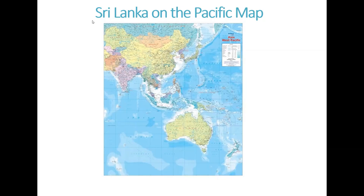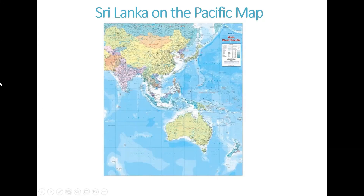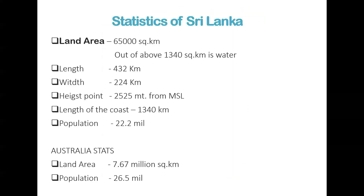First, I need to show where Sri Lanka is on the world map. Sri Lanka is right there at the edge of India. These are some statistics about Sri Lanka — I thought it might be nice to get an idea of what Sri Lanka is all about. It's only 65,000 square kilometers in size — a small country.